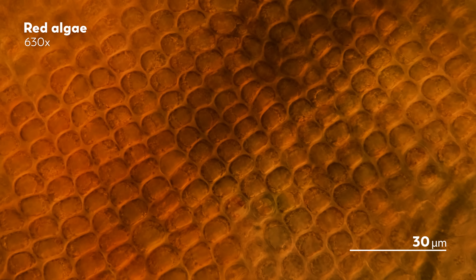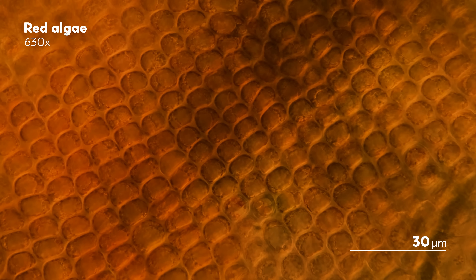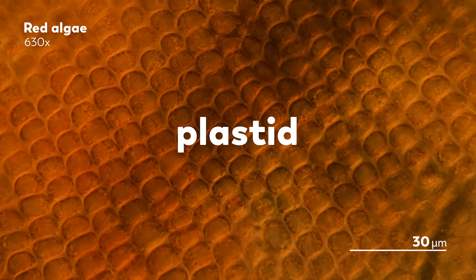The history of red algae can be told in part through what they have gained, lost, and given away over billions of years. It begins with a tale that is familiar to many of us in the microcosmos. A long, long, long time ago, a eukaryote consumed a cyanobacterium only to convert it into a photosynthetic organelle called a plastid.